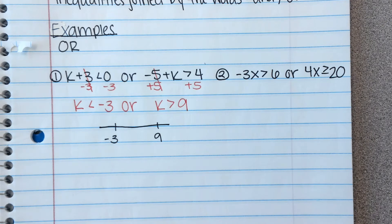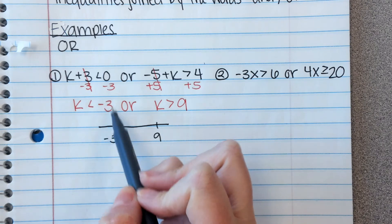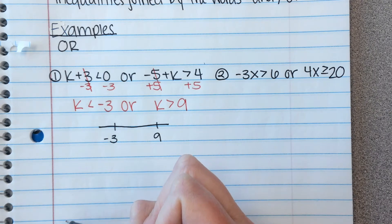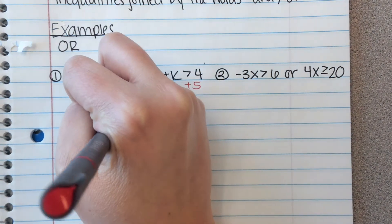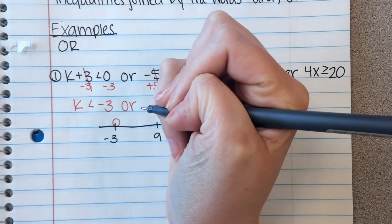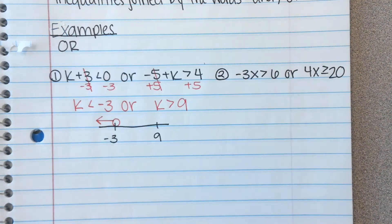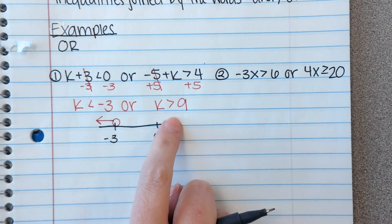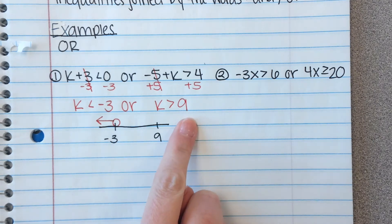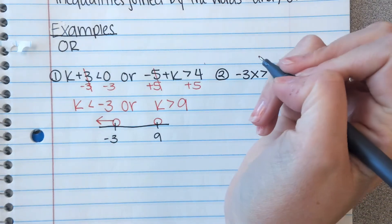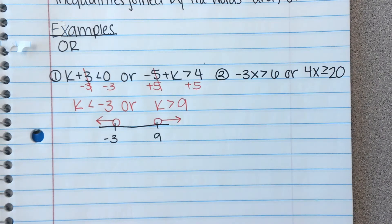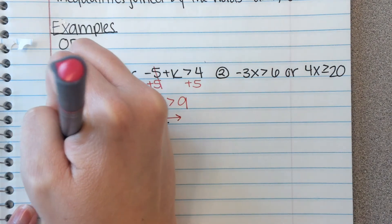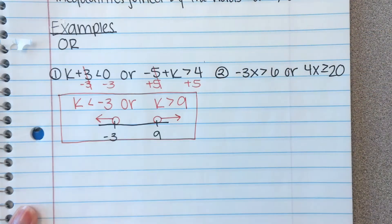We're going to graph them together in our notes. This isn't brand new information — you've done this in algebra one. K is less than negative three: less than is an open circle and we need the numbers that are less, so smaller numbers are on the left. Then we need to do the other inequality on the same number line. K is greater than nine: greater than is also an open circle and we want numbers that are bigger, so we go to the right. Those are both parts of our answer — the inequalities and the graph.